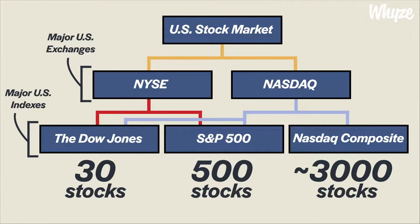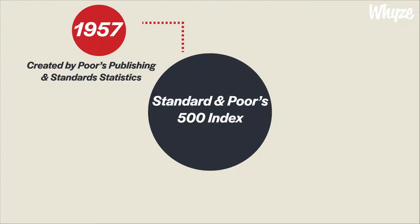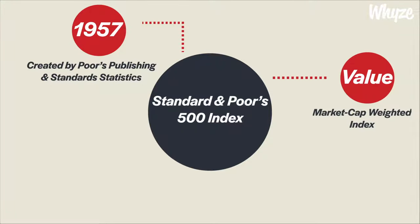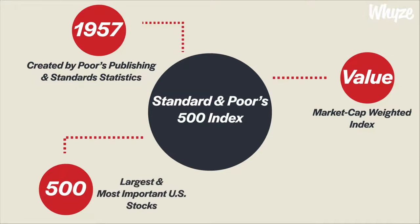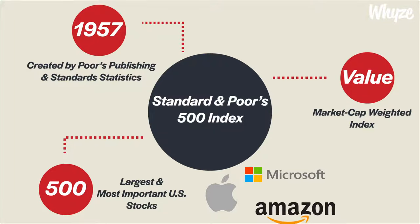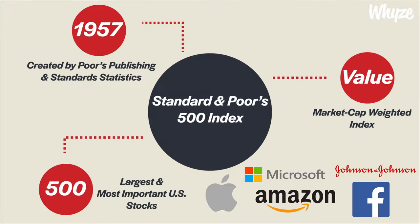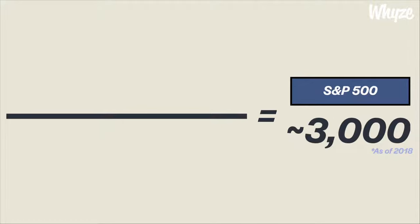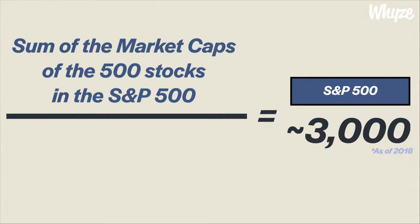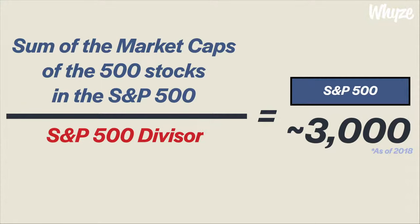Although the Dow is popularly tracked, many experts argue that the Standard and Poor's 500 index, commonly known as the S&P 500, is actually the better indicator of the U.S. stock market and economy as a whole. This is simply because the Dow only measures 30 of the most important companies in the U.S., while the S&P measures 500. Created in 1957, the S&P 500 is a market capitalization-weighted index including 500 of the largest U.S. companies on the New York Stock Exchange and the NASDAQ. The value of the S&P 500 is calculated by adding the market capitalizations of the 500 stocks in the index and dividing by a set number determined by Standard and Poor's.